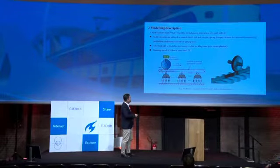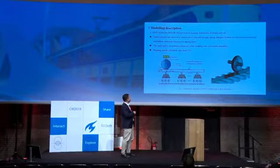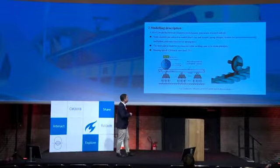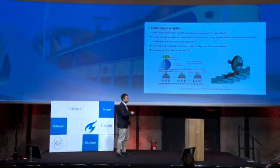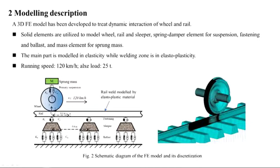This picture shows the dynamic model we have developed. The main parts — the wheel, the rail, and the slipper — are modeled by solid elements, and the other parts are expressed by a combination of spring and damper.